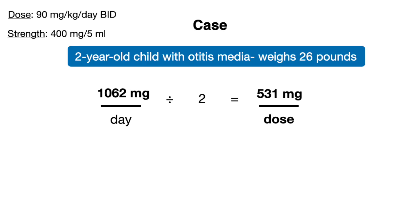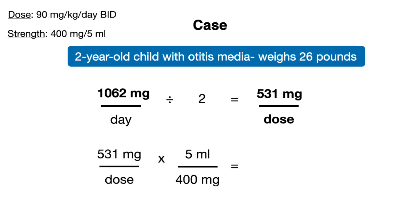Now we have a dosage in milligrams, but we need to convert to milliliters because the antibiotic will be given in liquid form. The amoxicillin suspension comes in a strength of 400 mg per 5 milliliters. We multiply 531 mg by this fraction, placing the 400 mg on the bottom so we end up with milliliters per dose. This gives us 6.6 milliliters to administer twice a day.